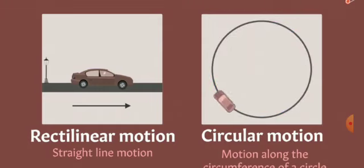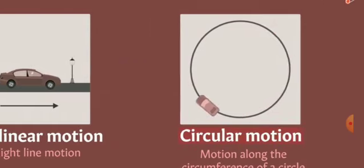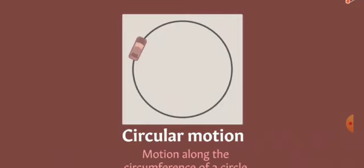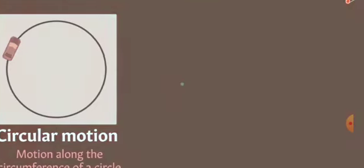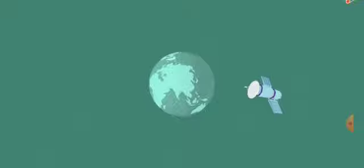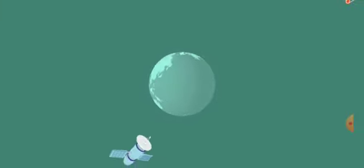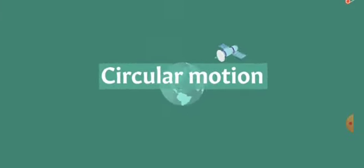So two types: first rectilinear and circular motion. Another example of circular motion is the motion of a satellite along the planet, which is a kind of circular motion because it moves in a circle. Then if you tie a stone with a thread and move it, it is moving in a circular path and this is circular motion.